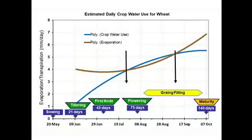But when you get up to late booting, flowering, and early grain fill, your crop is using the same amount of water as the evaporative demand or even slightly more. If, for example, your crop is now using four to five millimeters a day and your irrigation system can supply 20 millimeters, that means you have to have an irrigation cycle of four to five days. Then as you go from mid grain filling to maturity, your crop is using less water than evaporation but still around five and a half millimeters per day — so again, if you can deliver 20 millimeters per cycle, you have to have a cycle of four to five days.